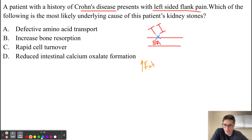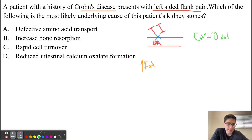We derive calcium and oxalate from our diet. In a healthy, normal bowel, calcium and oxalate form an insoluble complex, which is important because this complex can then be excreted out in the feces.